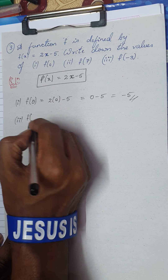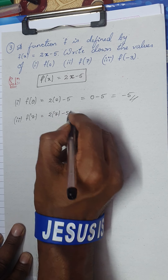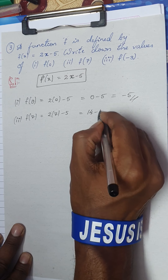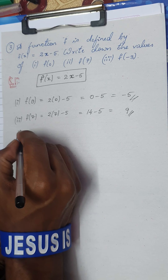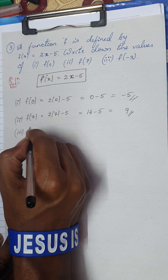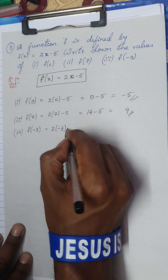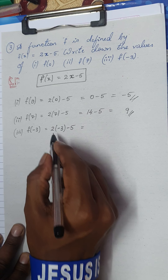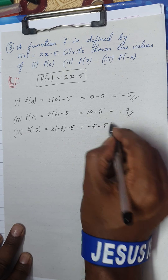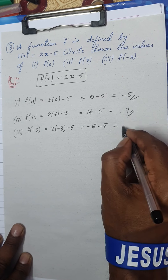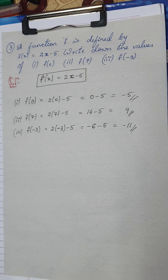Going on to the second one, f(7) is 2 into 7 minus 5, which is 14 minus 5, giving 9. Going on to the third one, f(-3) is 2 into minus 3 minus 5. Please be careful: 2 into minus 3 is minus 6, followed by minus 5. So this is minus 6 minus 5, which is minus 11. That concludes question number 3 - a very simple question.